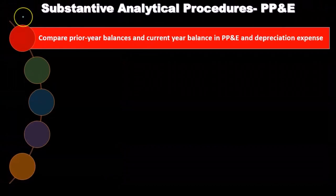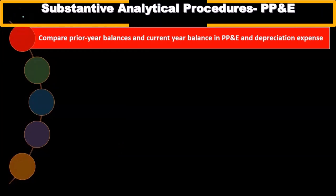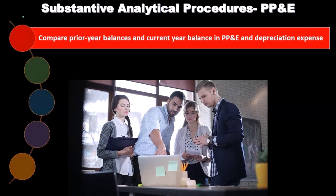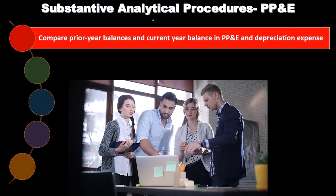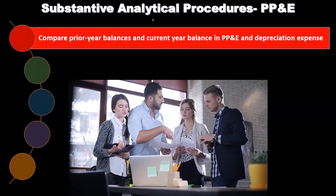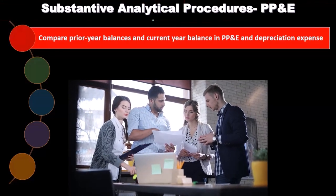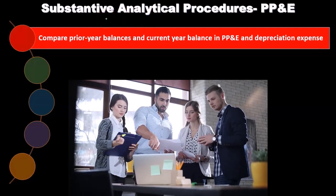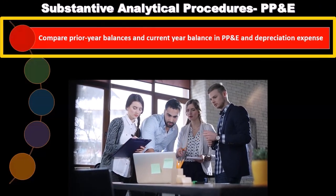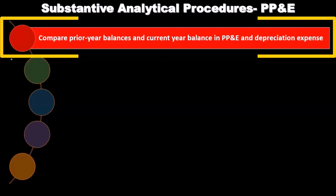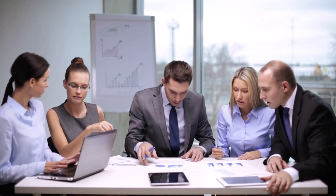Now we'll consider the substantive analytical procedures related to PP&E. We've talked about inherent risk and control risk; now we're thinking about detection risk and these substantive analytical tests. These are things like comparing ratios — done from the auditor's own office rather than going out to inspect assets or pull invoices. We can prepare prior year and current year balances in property, plant and equipment and depreciation, looking at the dollar change and percentage change to see if any change is significant.